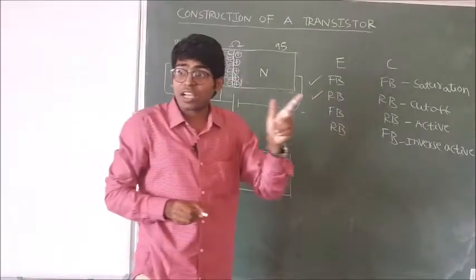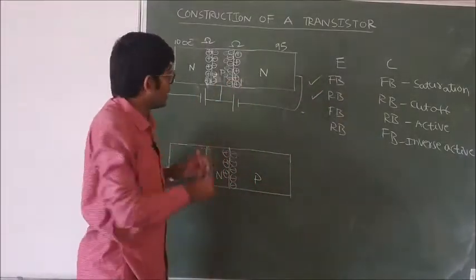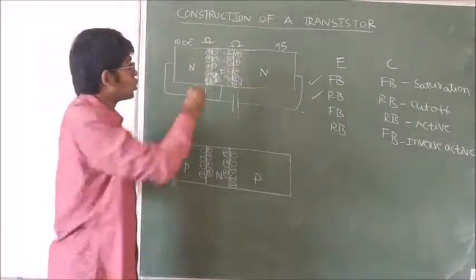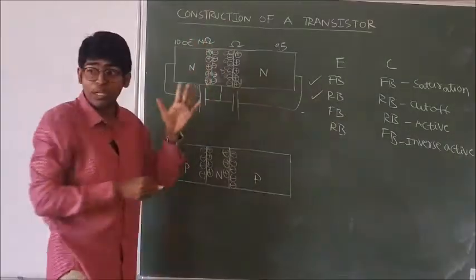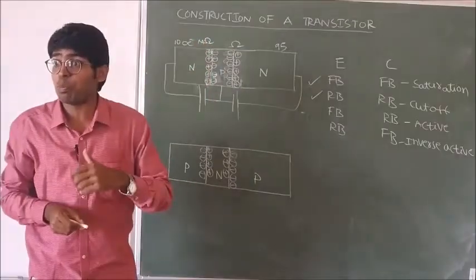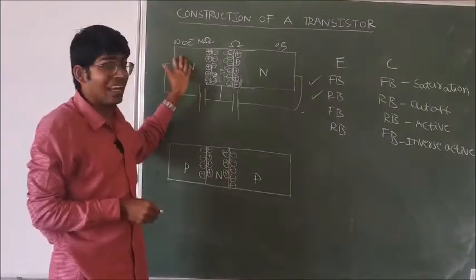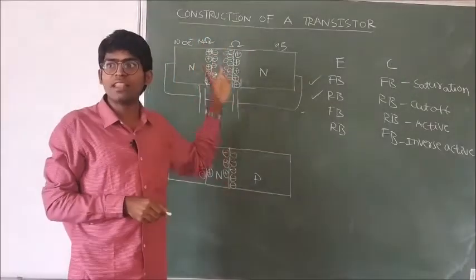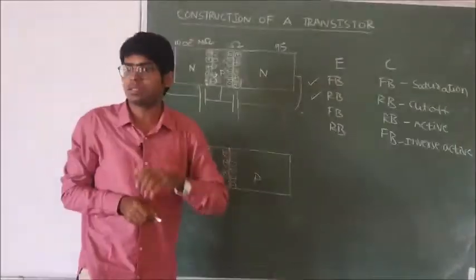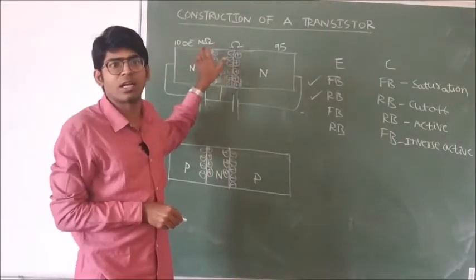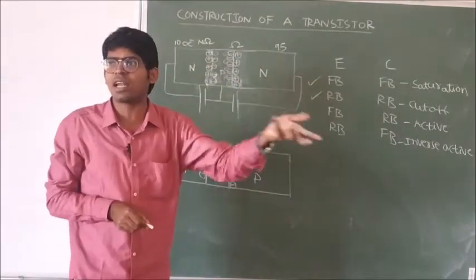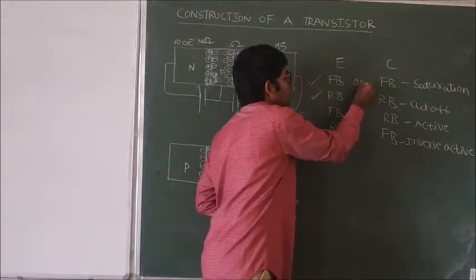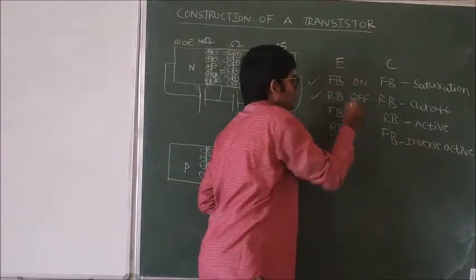Next they checked the cut-off region condition — both junctions reverse biased. The resistance at the emitter junction is in mega ohms. So the 100 electrons cannot move from the emitter to the base, and they certainly cannot move from the base to the collector. Therefore 100 electrons are not at all reaching the collector, and the transistor is acting like an off-switch.